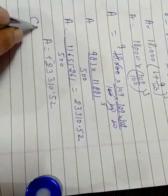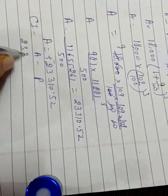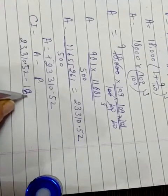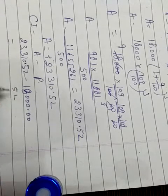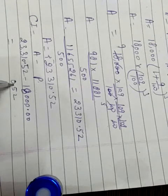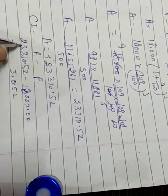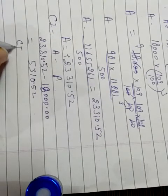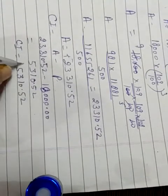Now find the compound interest: CI is equal to amount minus principal. Amount is equal to 23,310.52 minus P is equal to 18,000.00. So compound interest is equal to rupees 5,310.52.